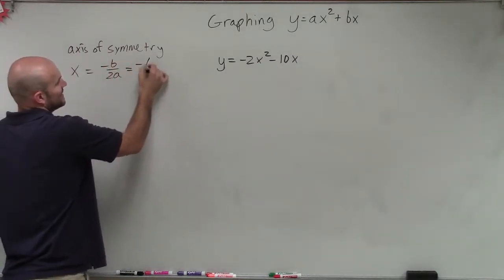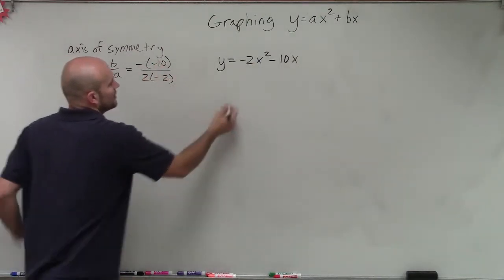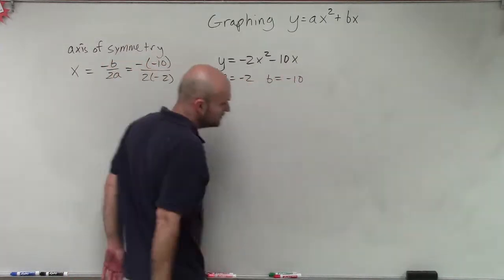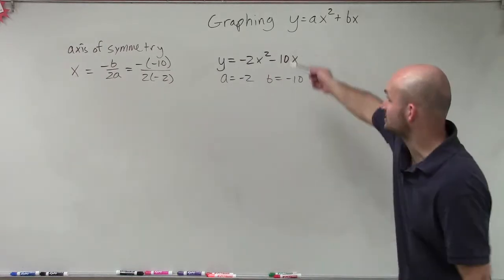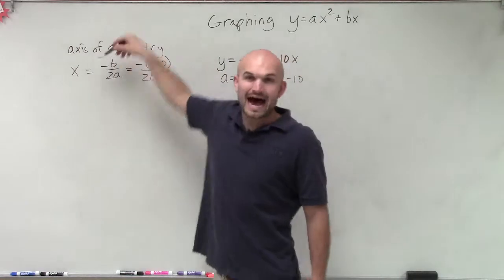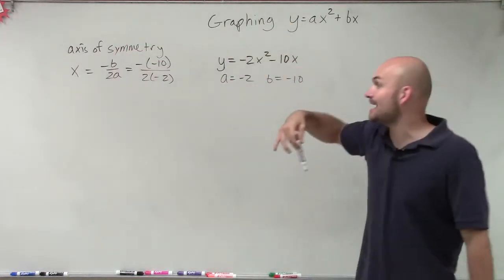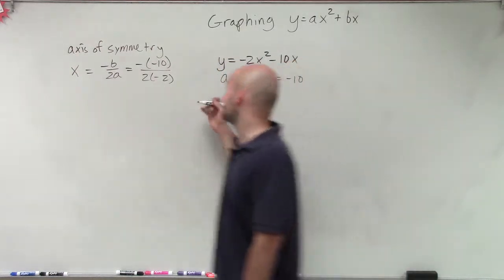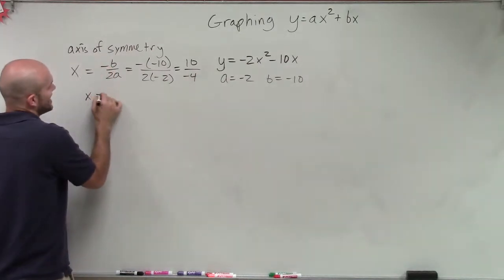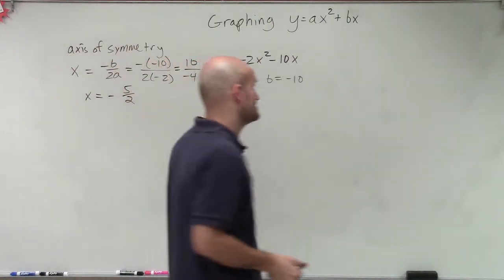Well, the opposite of b is going to be negative negative 10, divided by 2 times a, which is negative 2. Notice my a equals negative 2 and b equals negative 10. A very common mistake students make is to say it's already negative, so you just plug it in. But it says the opposite of b. b is negative 10, so the opposite of negative 10 is positive. So we'll have 10 over negative 4, which reduces to x equals negative 5 halves.